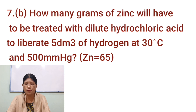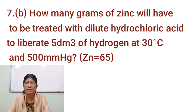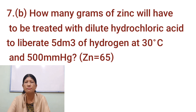How many grams of zinc will have to be treated with dilute hydrochloric acid to liberate 5 dm³ of hydrogen at 30 degrees Celsius and 500 millimetres of mercury?